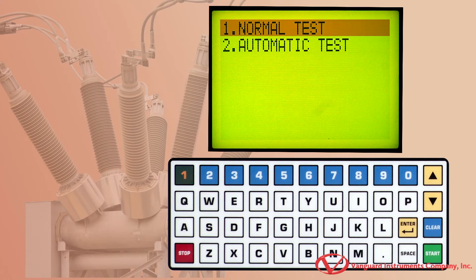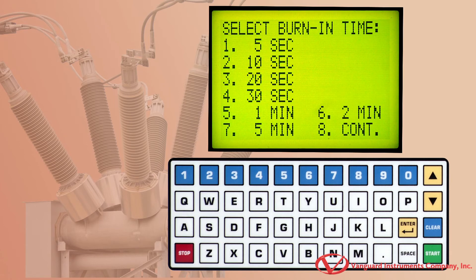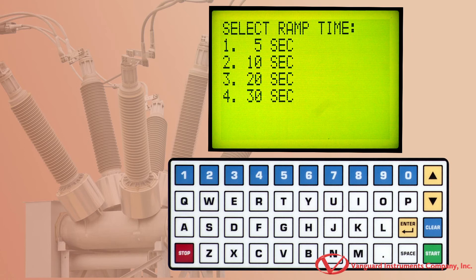We'll press the 1 key to select the normal test. We'll now select the test current from this screen by pressing the 4 key for 100 amps.